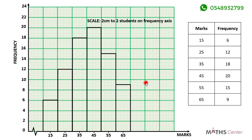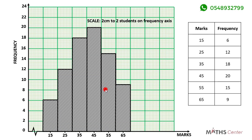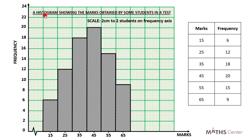After this, you can add a little design to make it look nice, just as I have done here. You will have to choose a title for the histogram — you will get the title from the question. From the question, we were told that the data represents the marks scored by some students in a test. So my title will be: a histogram showing the marks obtained by some students in a test.